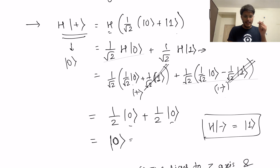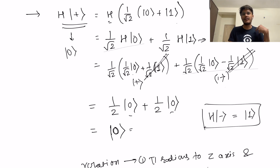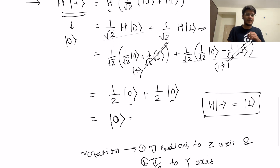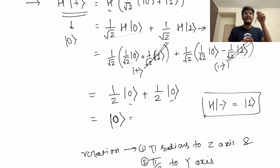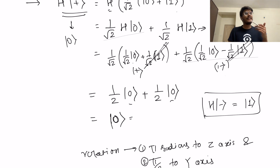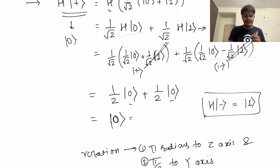On the Bloch sphere, how the Hadamard gate works involves two steps: first, along the Z-axis it will rotate the state by π radians, and then along the Y-axis it will rotate it by π/2 radians. That is how on the Bloch sphere you can also visualize the output of applying the Hadamard gate on any initial state. That's it about the Hadamard gate, and I hope you have got a clear picture of superposition from this video.